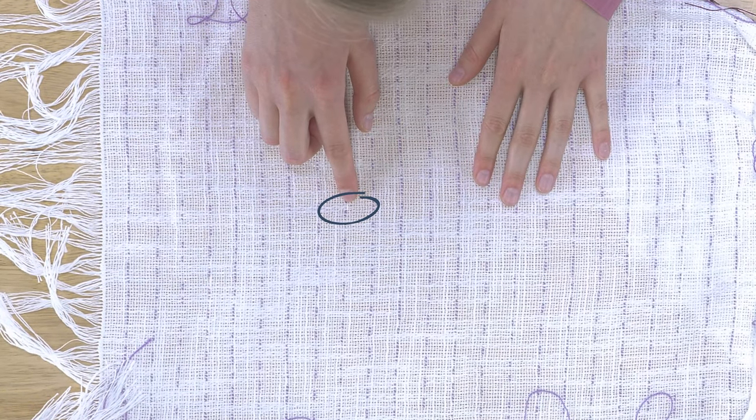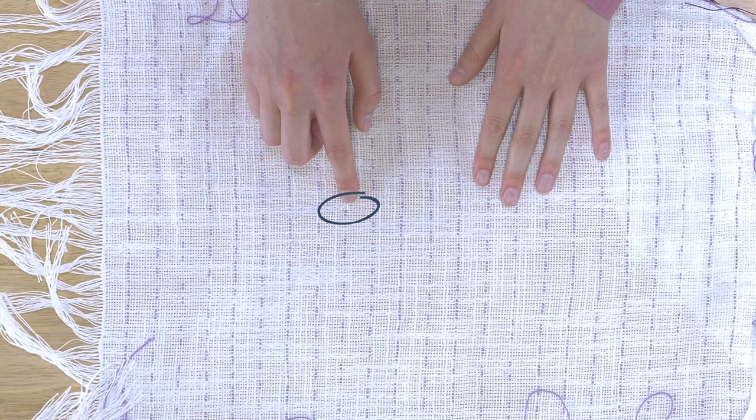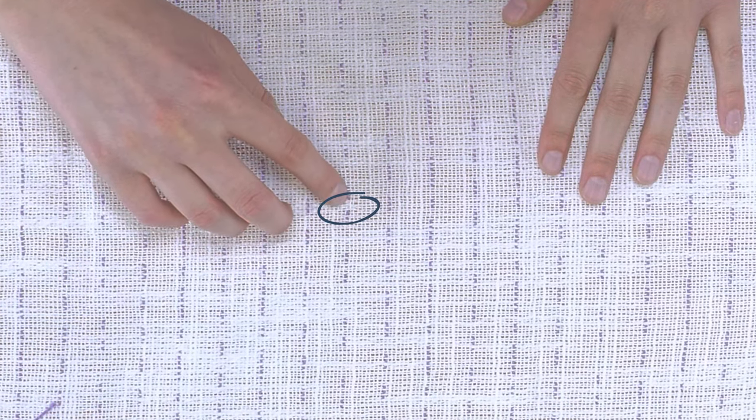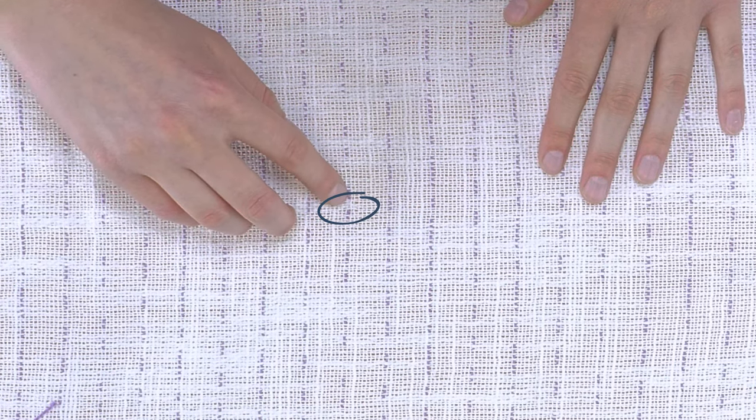There is our little culprit. So we can see that there is a little extra float of the weft. Instead of going over under, over under, we have it go over several ends.